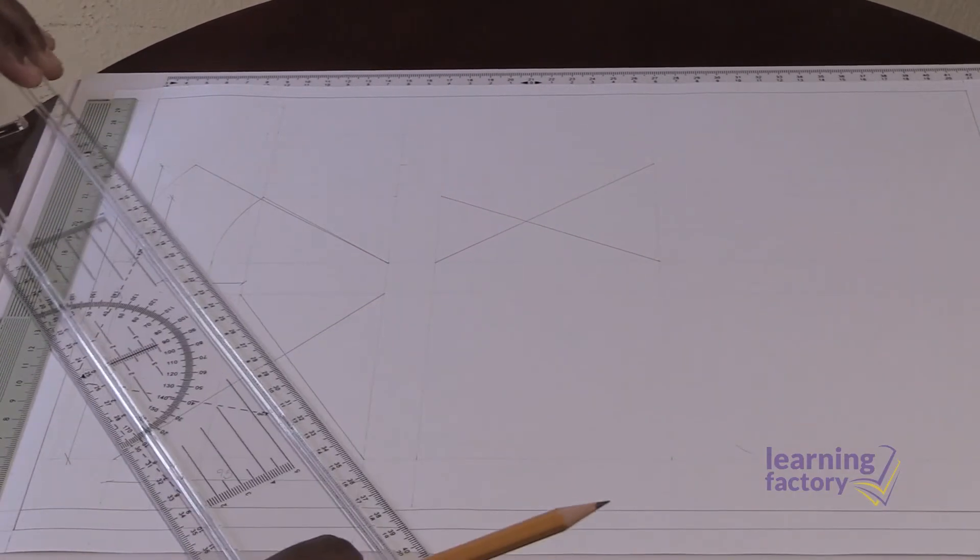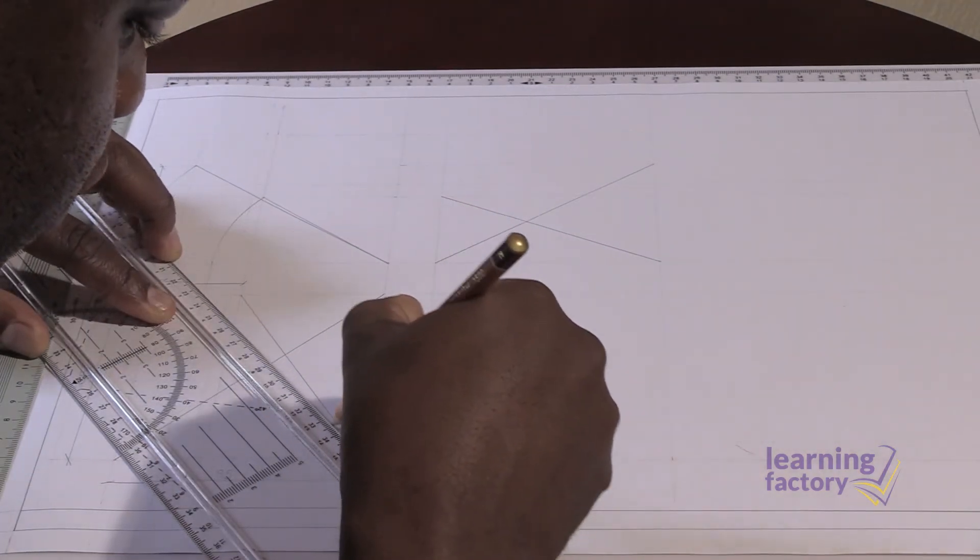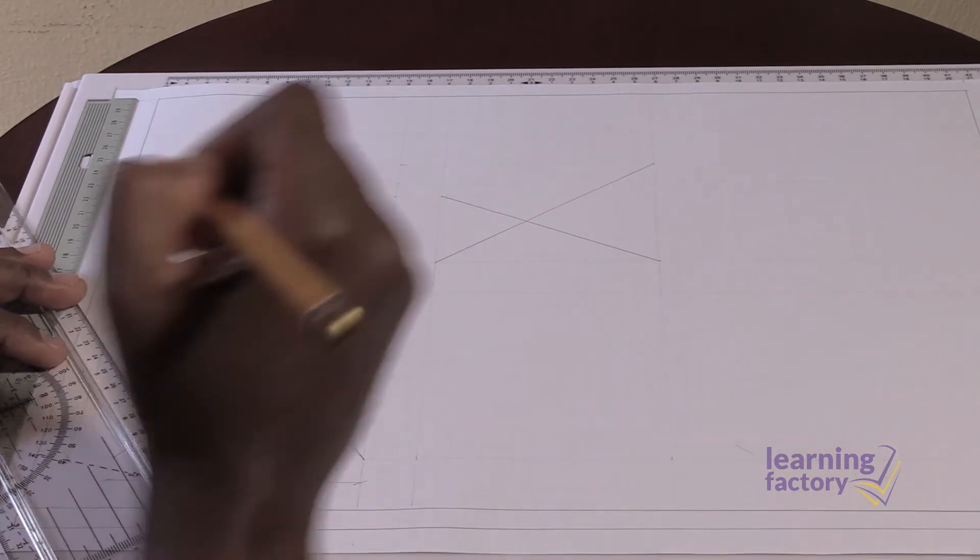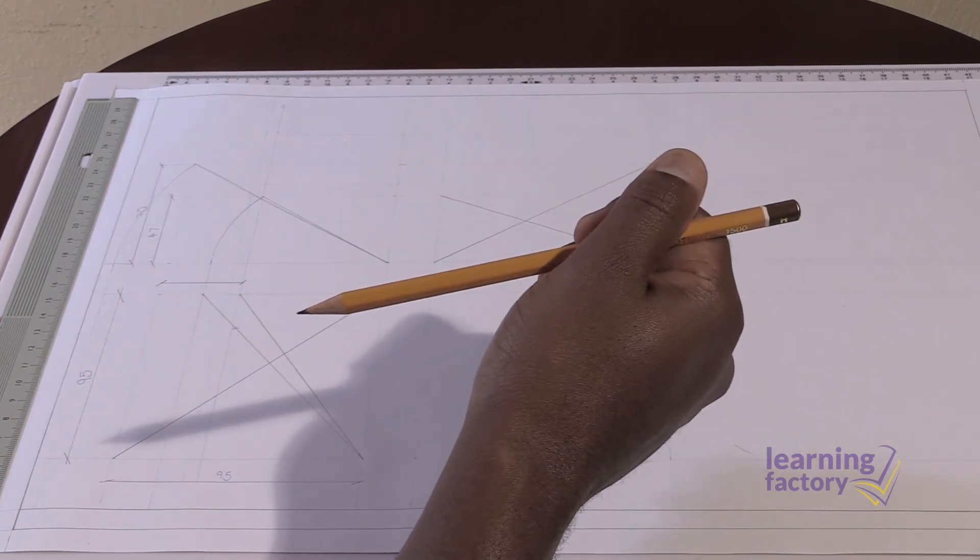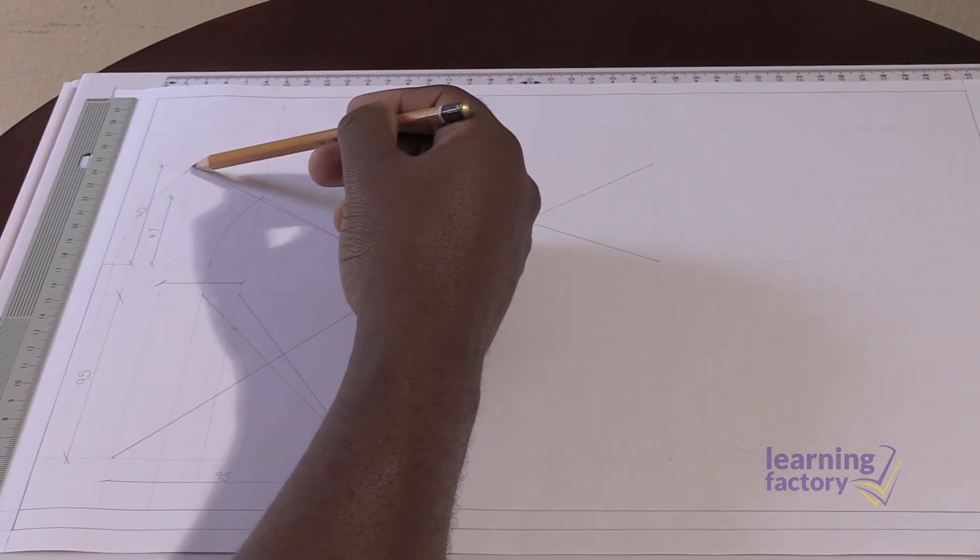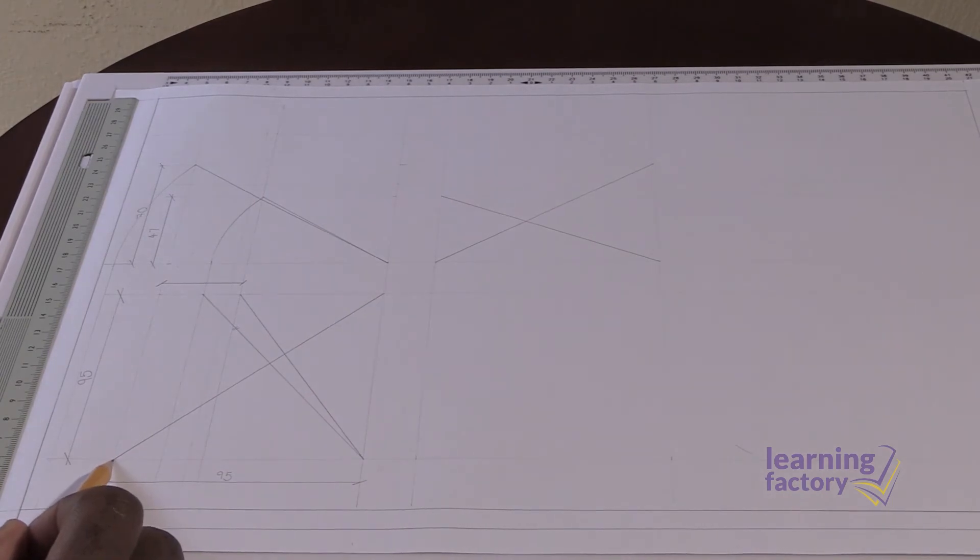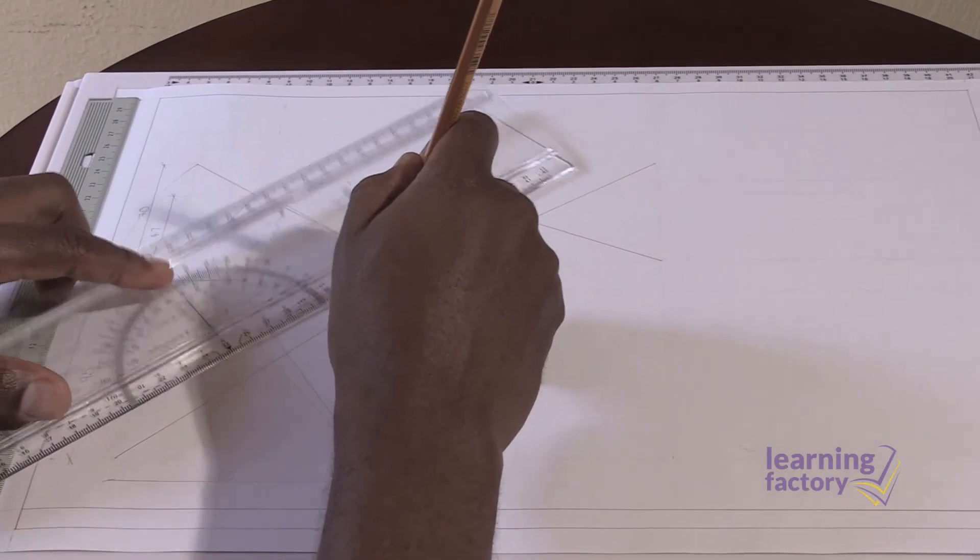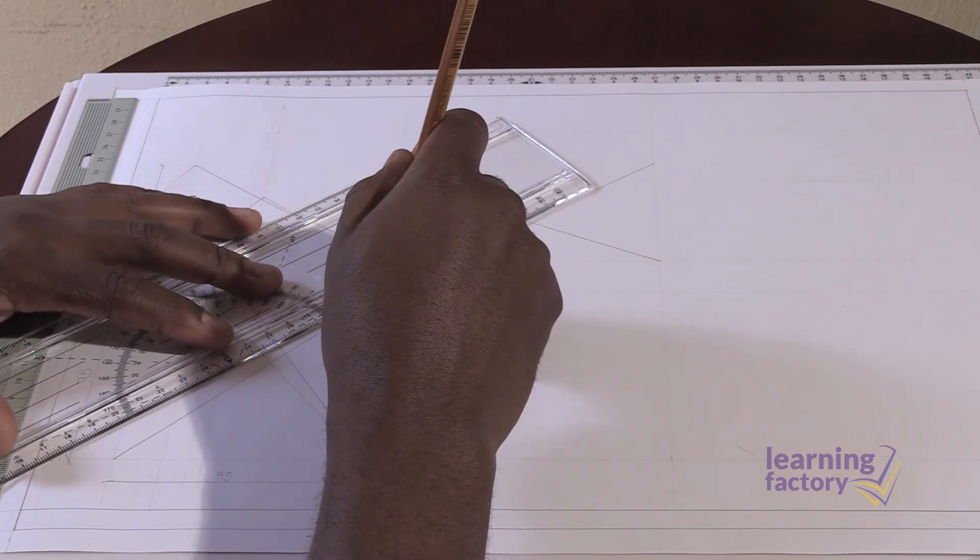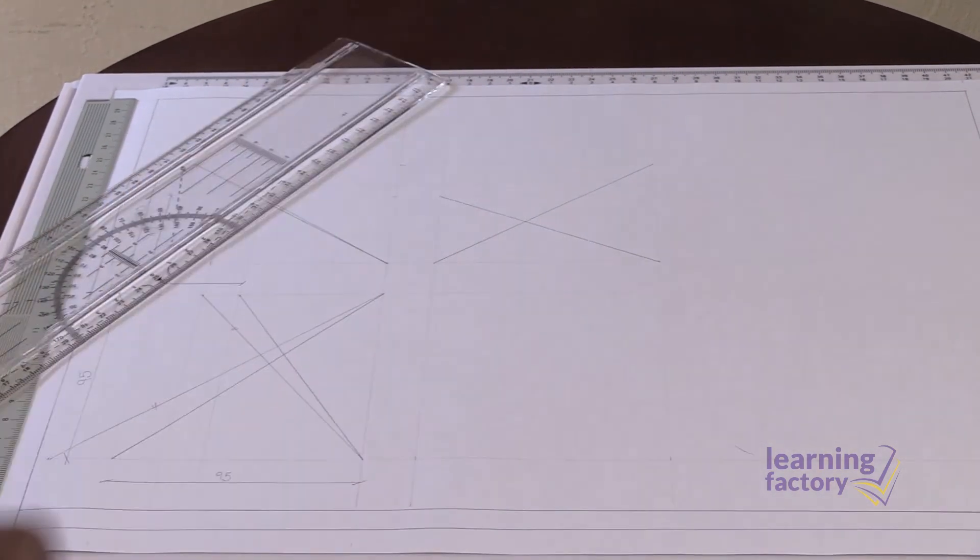And from there, we draw a line which is going to represent the true length of the black stick. In a similar fashion, this is the green stick. From that point, we've dropped our curve and our vertical line, and it's intersecting with that point there. So we're going to draw our line representing our true length of the green stick. And that represents the true length of our green stick.